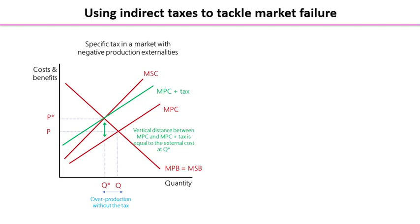Remember with externalities, the people involved in the market do not take into account the impact on those third parties — they only think about the private costs. So in a free market, the equilibrium occurs where marginal private cost (MPC) equals the marginal social benefit. That's where equilibrium is at P and Q, and you can see at the bottom of the screen I've illustrated that level of overproduction when we do not have a tax.